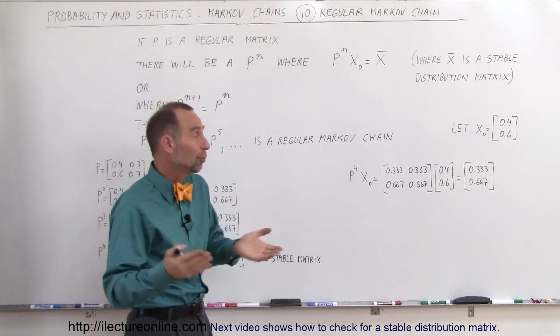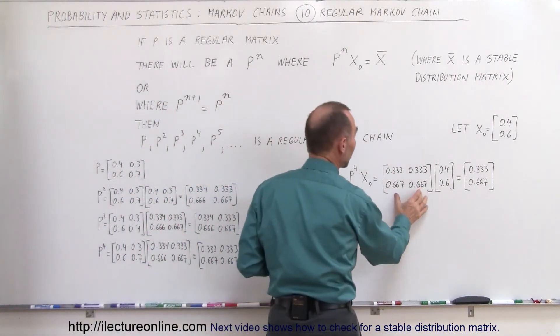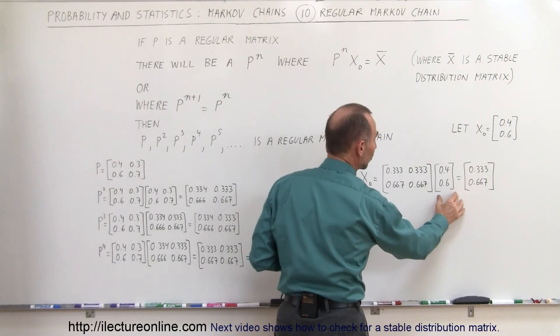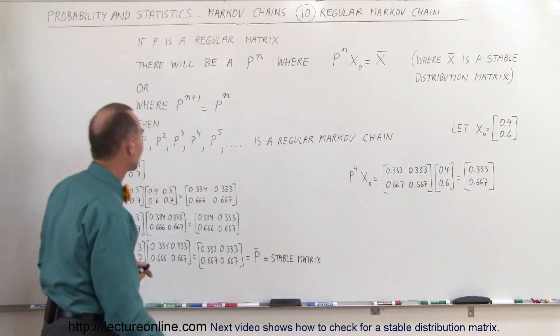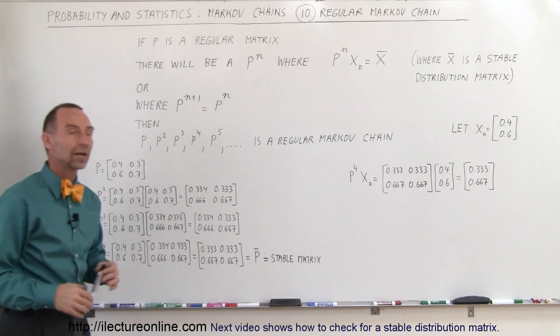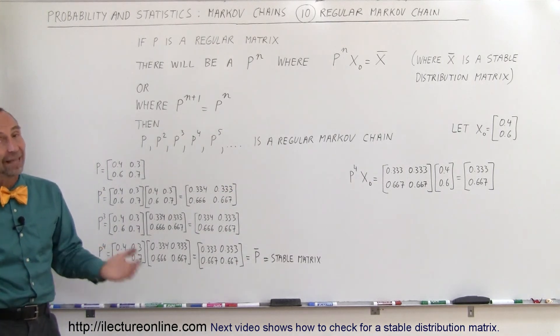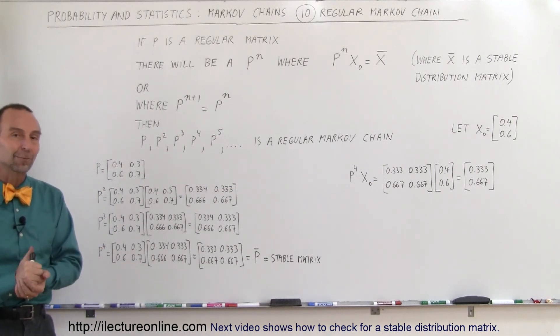And so we end up proving that when we take the stable P matrix, multiply times the initial state, we get the stable state, and therefore we can say that this is a regular Markov chain. And that's the definition of a regular Markov chain.